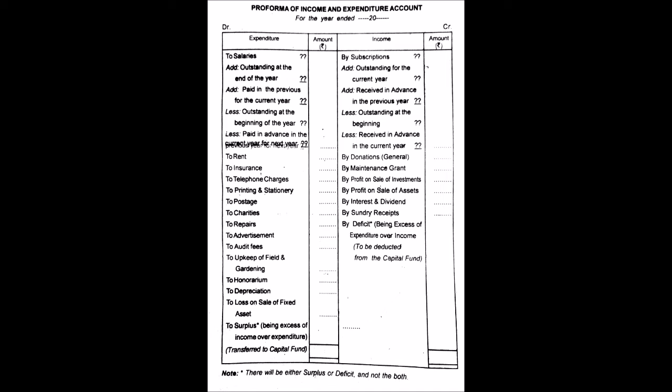Another distinction is revenue versus capital items. In the income and expenditure account, you take only revenue items — items of a recurring nature pertaining to normal operations. For example, salary is revenue and recurring, so you include it. Purchasing a vehicle or car is a capital item, so you do not include it. Regular donations from members are included, but a donation specifically for constructing a building is for a specific purpose and is not included. Only revenue items belonging to the current year are treated in the income and expenditure account. You can see the pro forma of the income and expenditure account on screen.